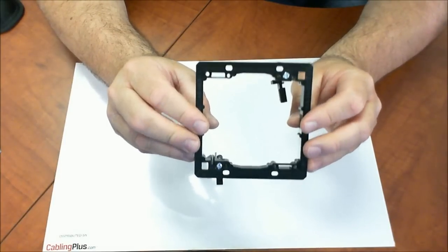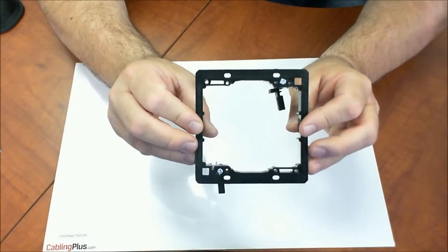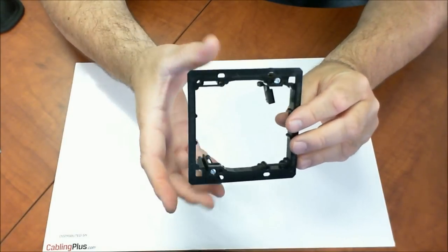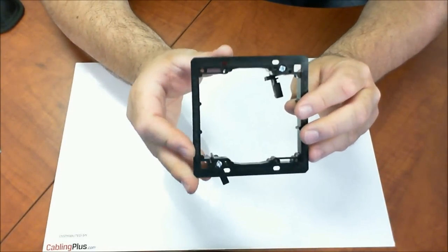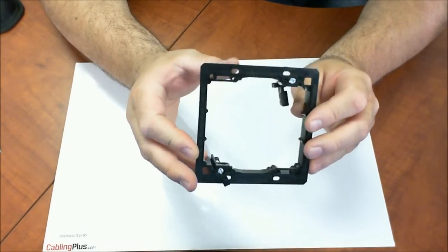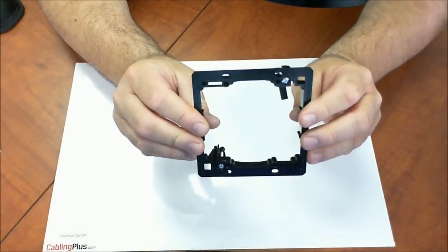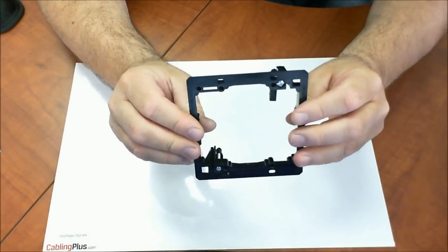double gang wall plate, a face plate, a home theater plate. It could be used for a speaker surround sound plate. Any plate that's a double gang is what you're going to need to install to create that really strong platform in the wall that you can now screw your plates onto.